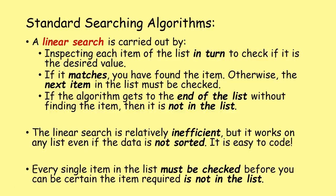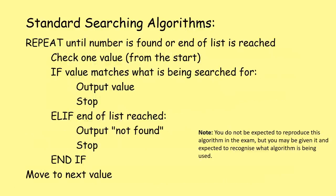The linear search is relatively inefficient, but works on any list even if the data is not sorted. It is also very easy to code. Every single item in the list must be checked before you can be certain that the item required is not in the list. Here we have an algorithm for the linear search. You don't need to reproduce this in the exam, but you have to be familiar with it because you may be given pseudocode and need to recognize what type of search it represents.